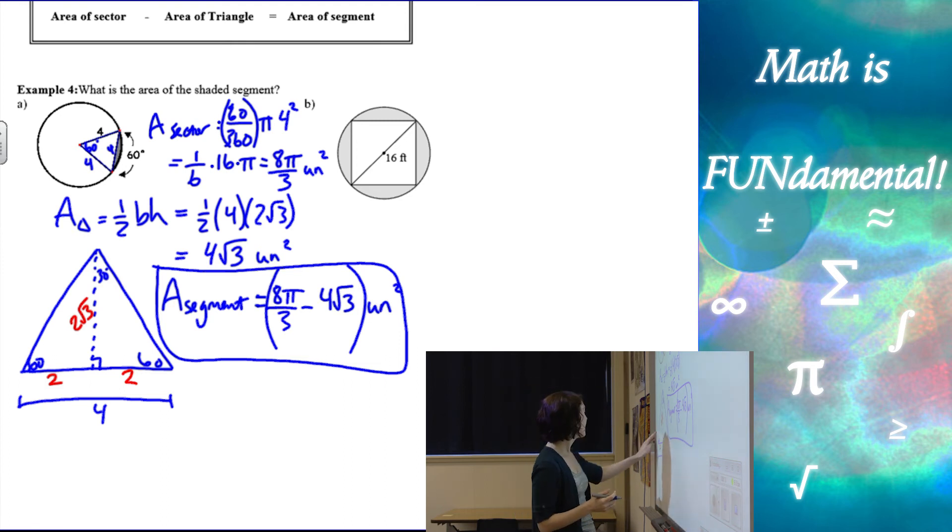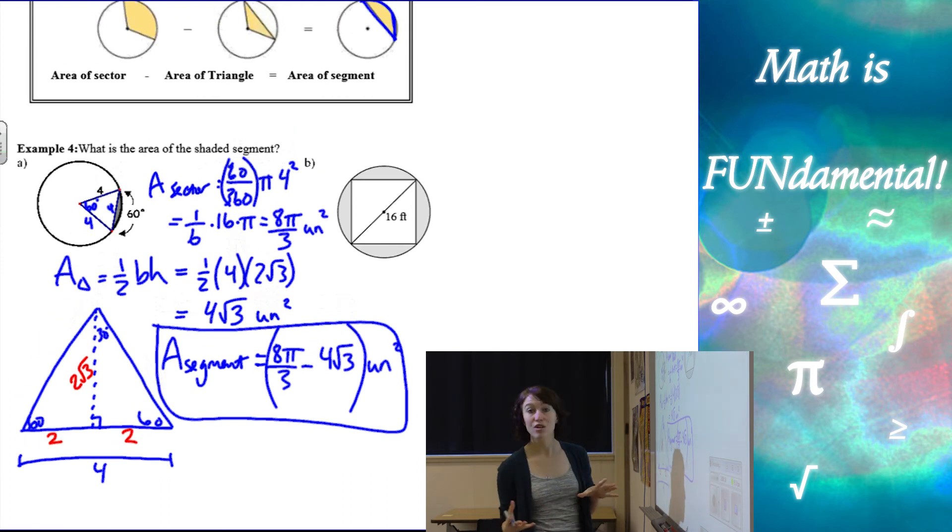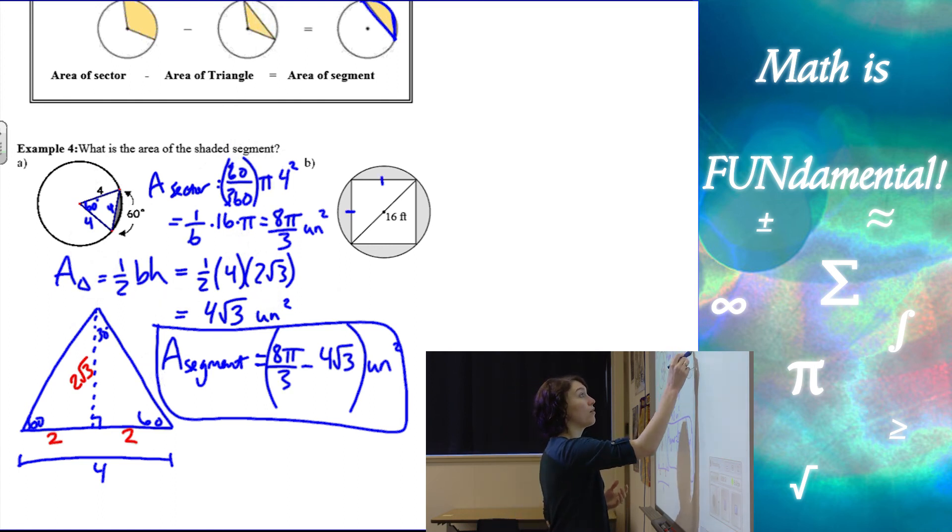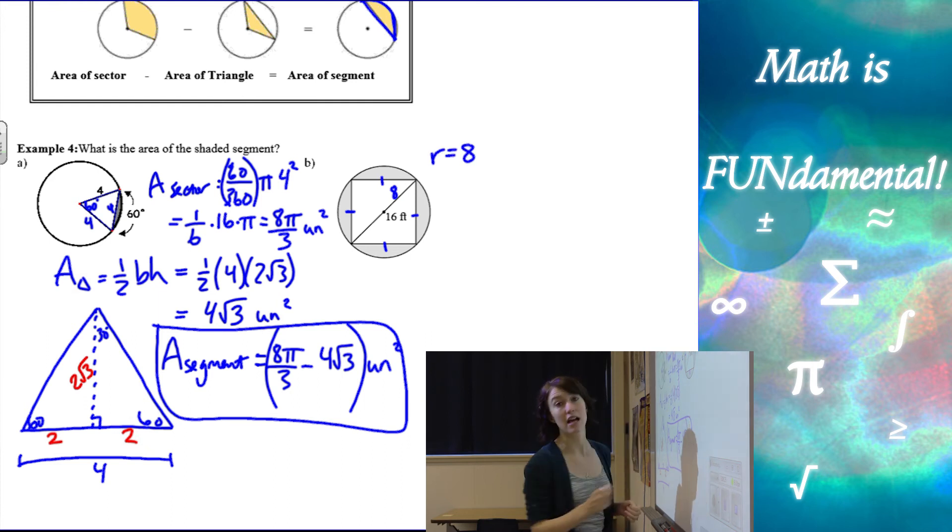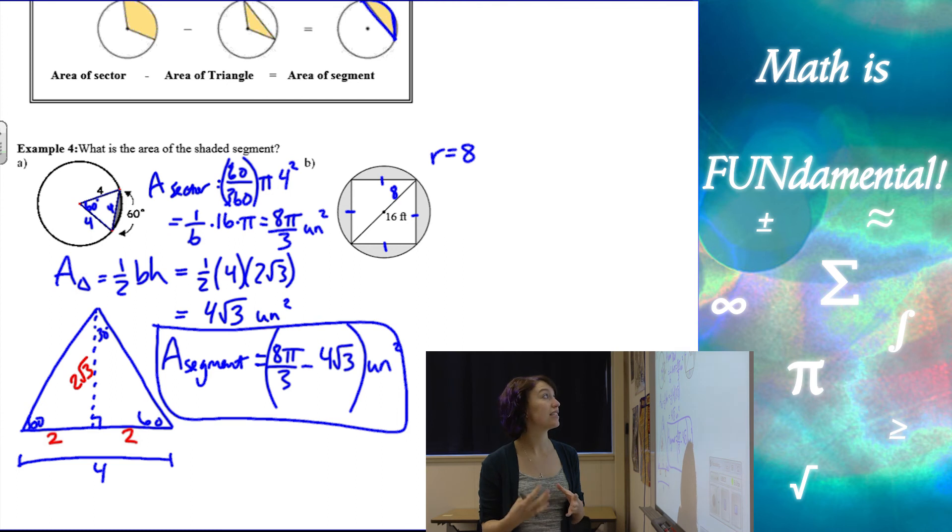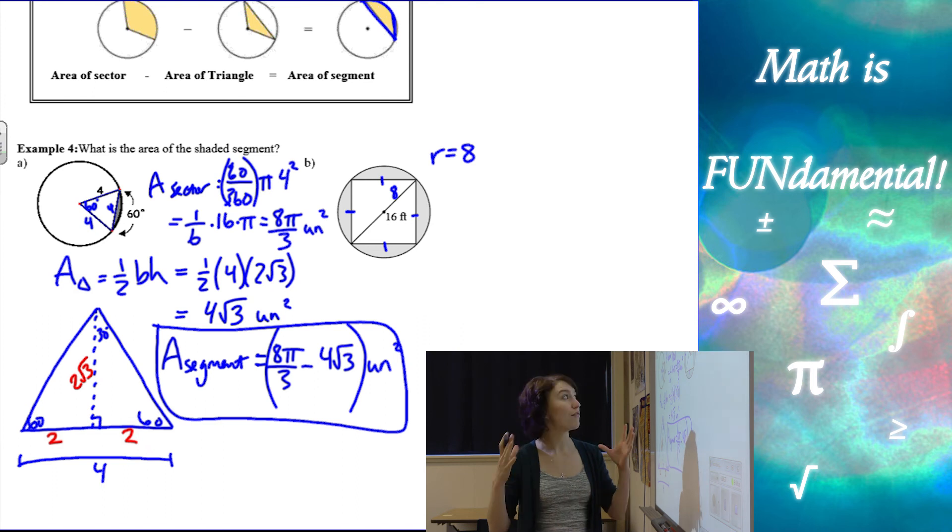Alright, last example, we have a circle with an inscribed square, and we know that the diagonal or the diameter of this circle is 16 feet, which means our radius is going to be 8, so we can put that to the side for now, and work on finding the area of the shaded regions. So what we want to do is just take the area of the circle minus the area of the square. So this one's actually a little easier than the last one.